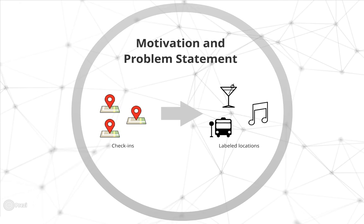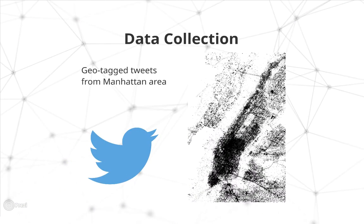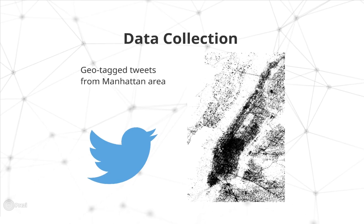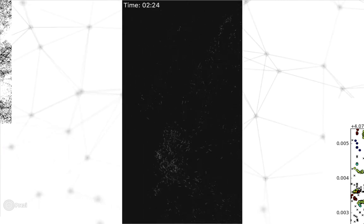The first step in this process is collecting data that is both a location and a timestamp. We use the Twitter API to collect tweets from the Manhattan area over a one-month period. We then filtered out bots to ensure the accuracy of our data.